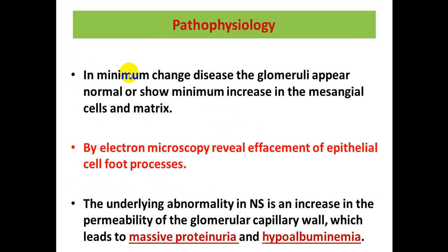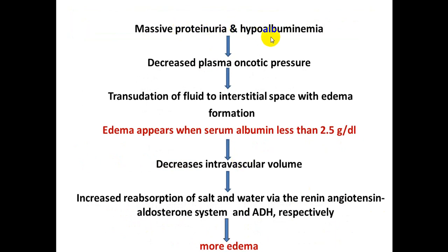Pathophysiology: In minimal change disease, the glomeruli appear normal or show minimal increase in mesangial cells and matrix, while electron microscopy reveals effacement of the epithelial cell foot processes. The underlying abnormality in nephrotic syndrome is increased permeability of the glomerular capillary wall, leading to massive proteinuria and then hypoalbuminemia. This results in decreased plasma oncotic pressure, causing fluid to shift from the intravascular space to the interstitial space, forming edema.